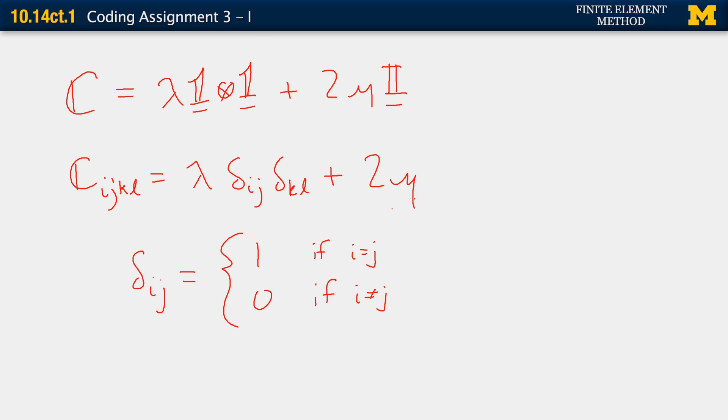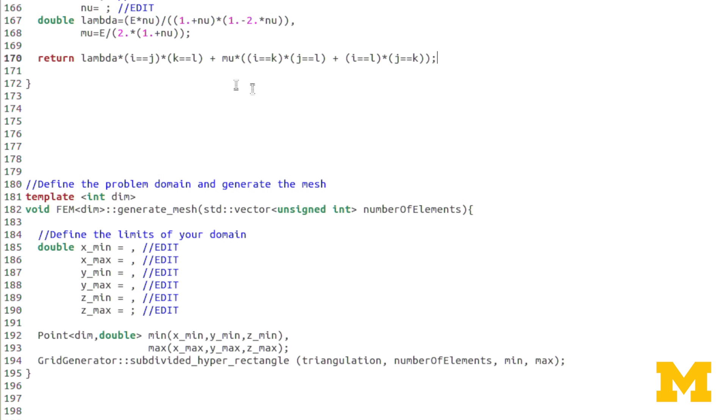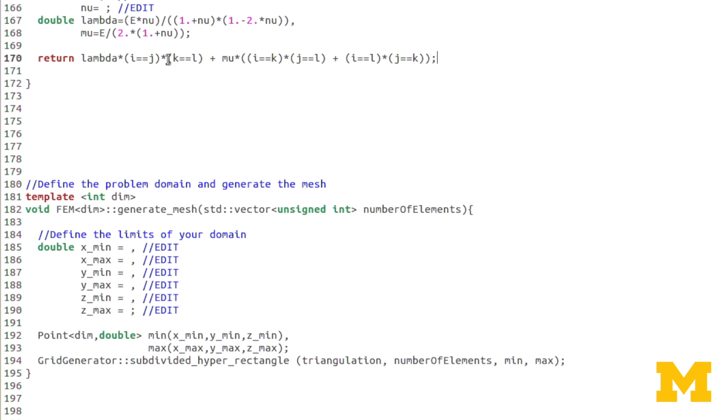We have two mu, and then here we have one-half times delta_ik delta_jl plus delta_il delta_jk. That's what you see in the code here. I'm using these conditional statements: if i equals j, if k equals l. If i equals j, the condition is true so it returns 1. If i is not equal to j, the condition is false so it returns 0. So it's acting the same as a Kronecker delta. It's a little bit cleaner and quicker than typing in an if statement but serves the same purpose.